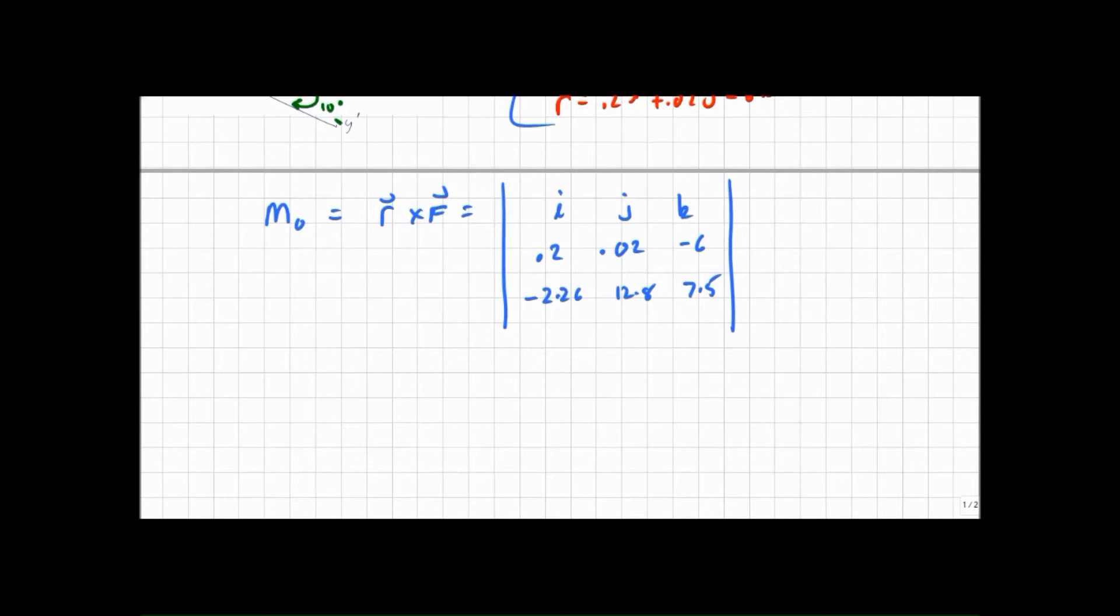So I can evaluate that determinant. Multiplying out my determinant, I have M zero and that's a vector, equals i times 0.02 times 7.5,